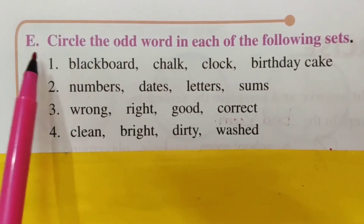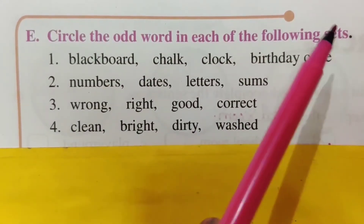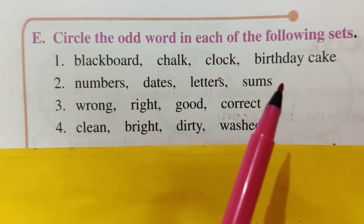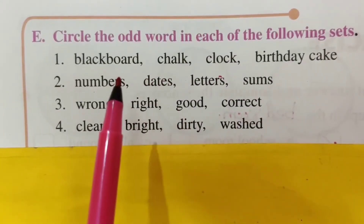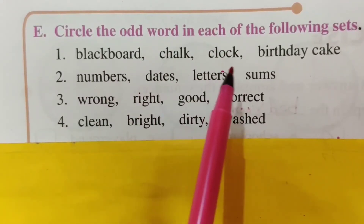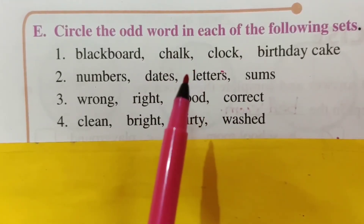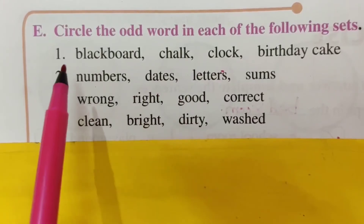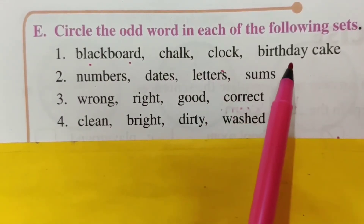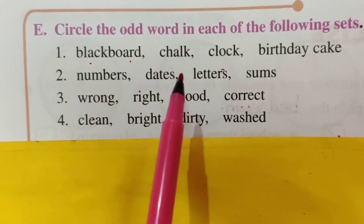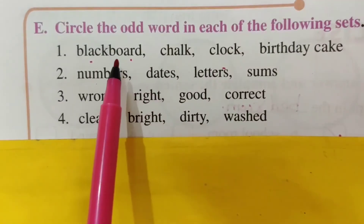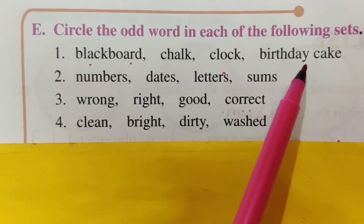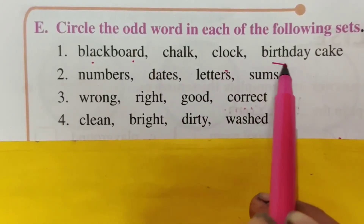Now this bit: 'Circle the odd word in each of the following sets.' What is he telling? He has given some related words and one different word. We have to find that different word and circle it — we call it the odd word. For example: blackboard, chalk, clock, birthday cake. Where can you see blackboard, chalk, and clock? In the school classroom. But we don't have birthday cake in the classroom every day. So circle 'birthday cake' because it is the odd one.